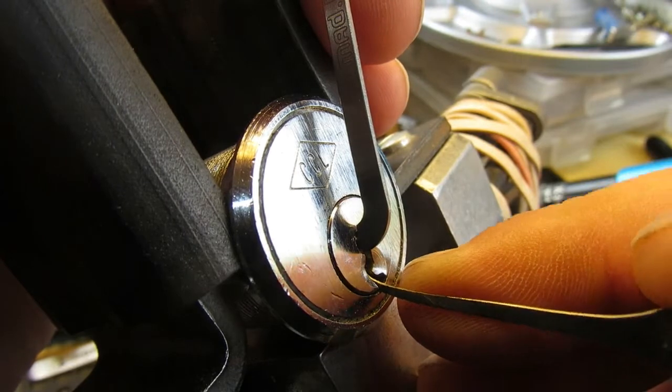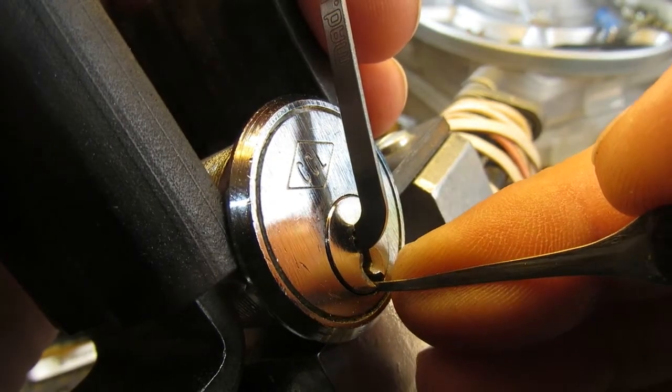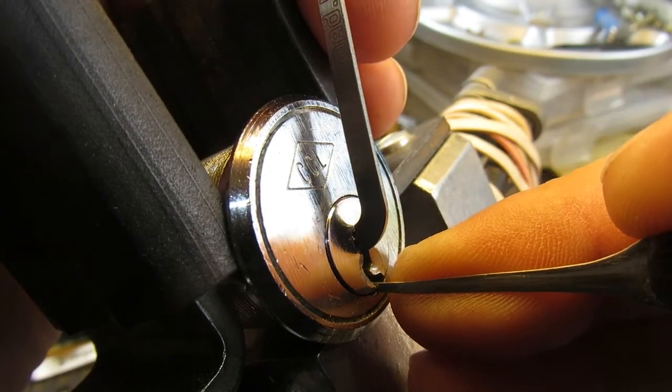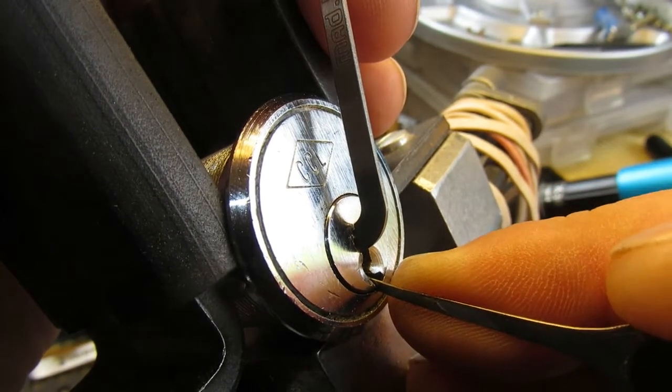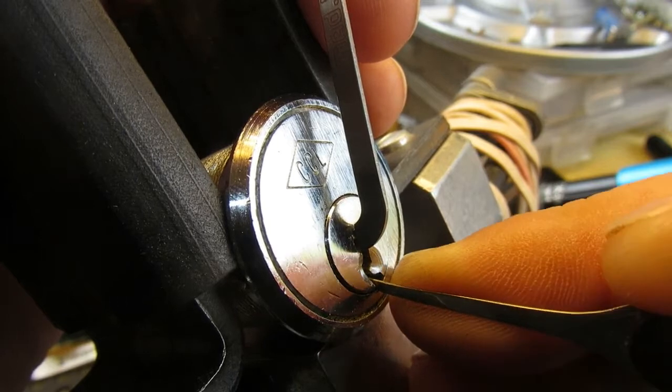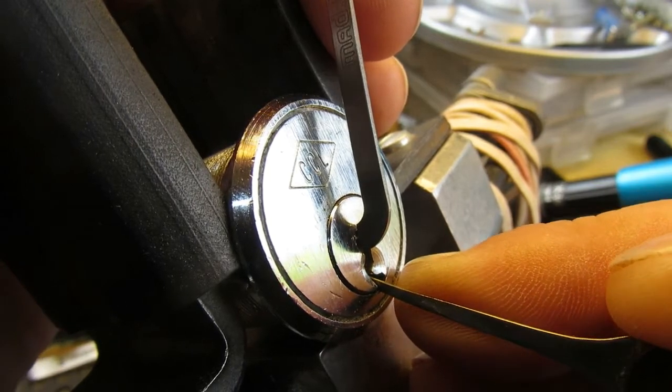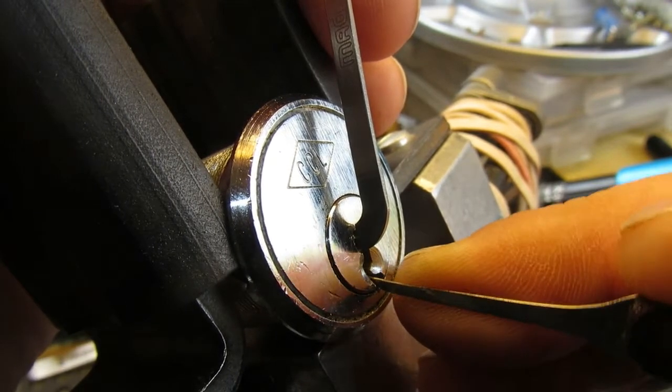So we'll begin at the front. Number one is binding. And we've got a click, now it's gone loose. And we've got a second click, now it's gone solid.